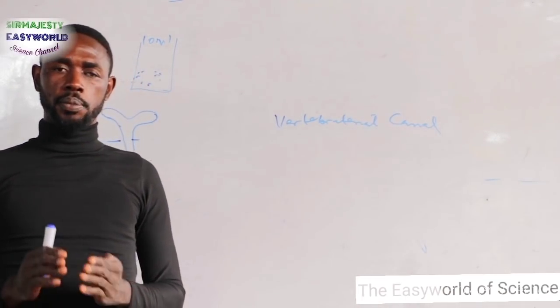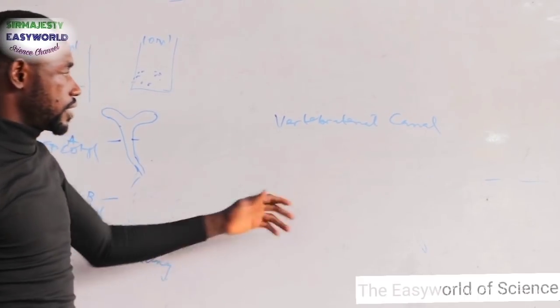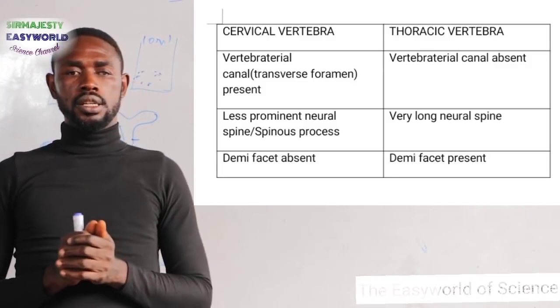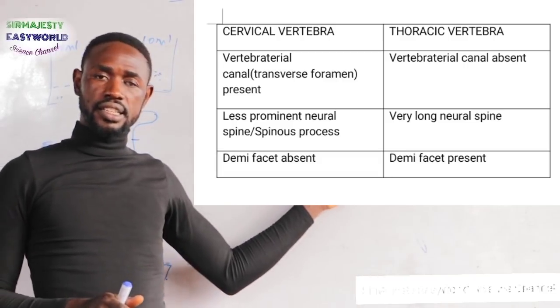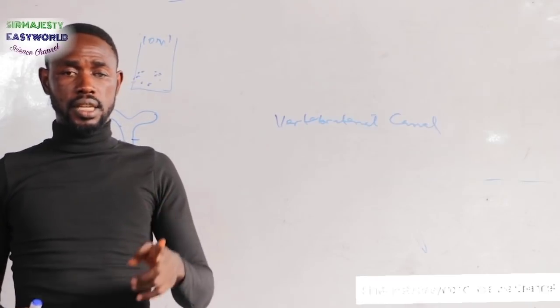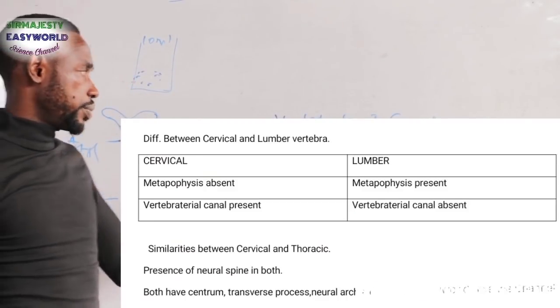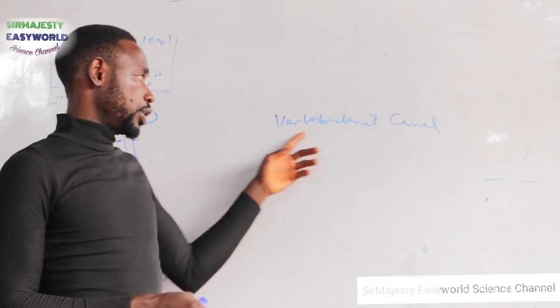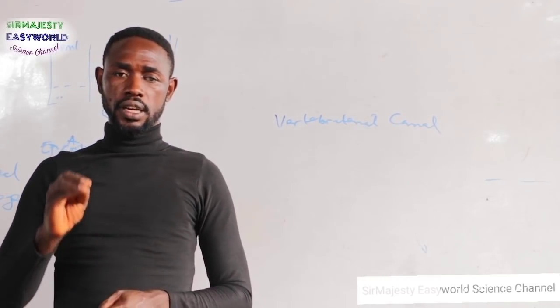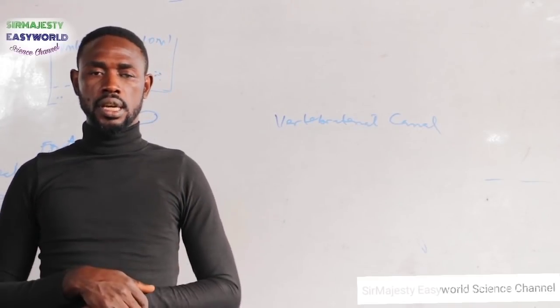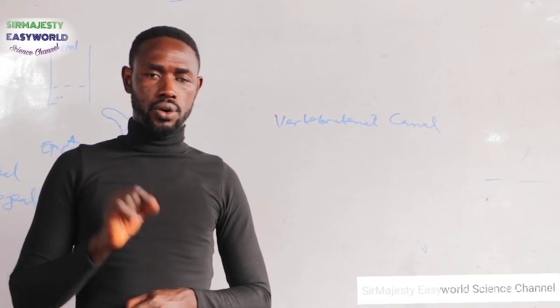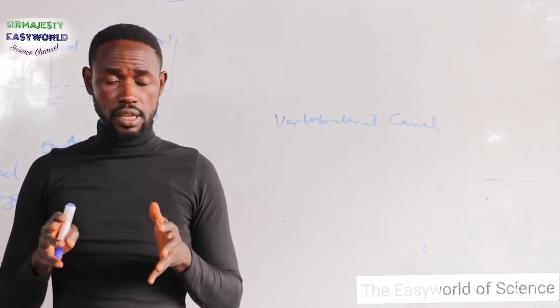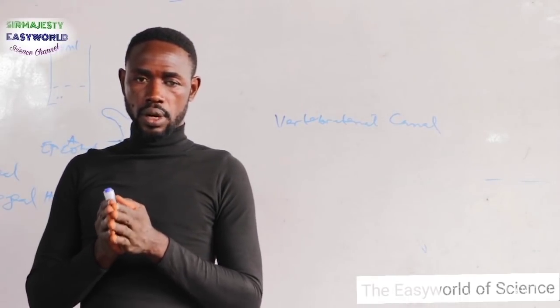What's the function of the vertebrarterial canal? It provides passage for blood vessels and nerves that supply the head. When they talk about the cervical bone to compare it with lumbar vertebra, you see that there is presence of a vertebrarterial canal in the cervical bone, absence in thoracic and lumbar. Other features of cervical bones are: presence of centrum or body except atlas, presence of neural spine but not prominent, presence of transverse process, and presence of neural canal for passage of spinal cord.